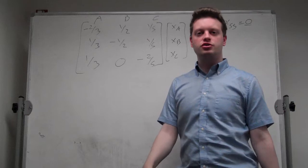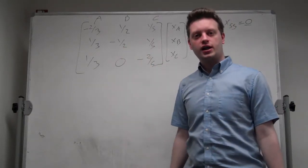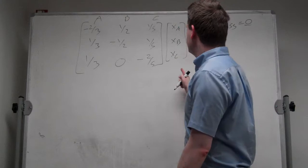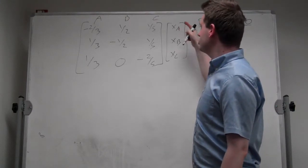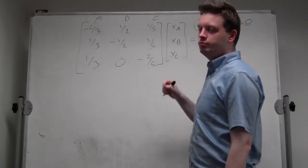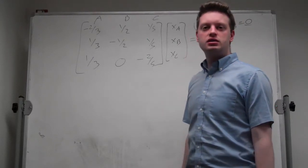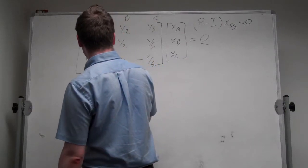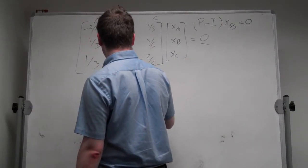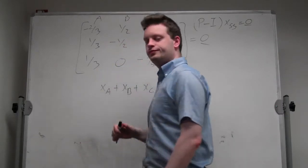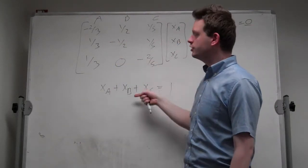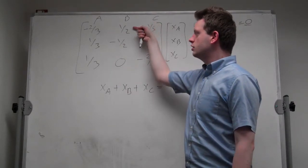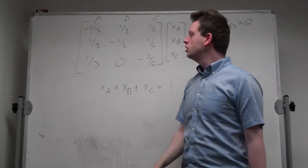We have a system of three equations, which you can solve provided this matrix has full rank. Now unfortunately, this matrix has only rank two. But if we want to find the shares, the proportion of people in state A, the proportion of people in state B, and the proportion of people in state C in steady-state, we know that these proportions have to sum up to 1. So we know that XA + XB + XC = 1. We have four conditions, three of which are linearly dependent. So we have to delete one of these three rows and replace it with this condition to find our steady-state.